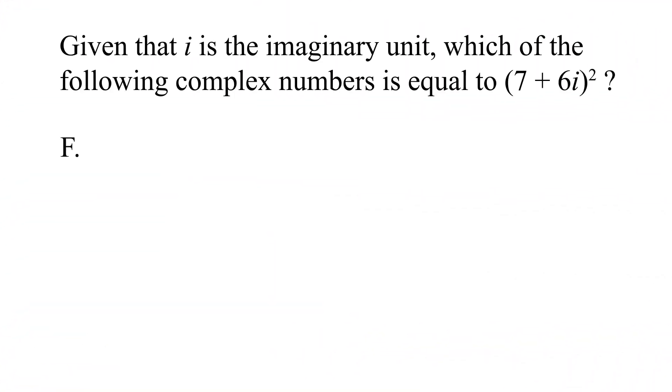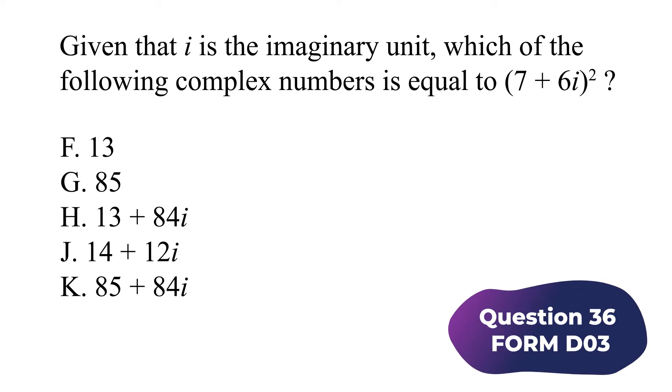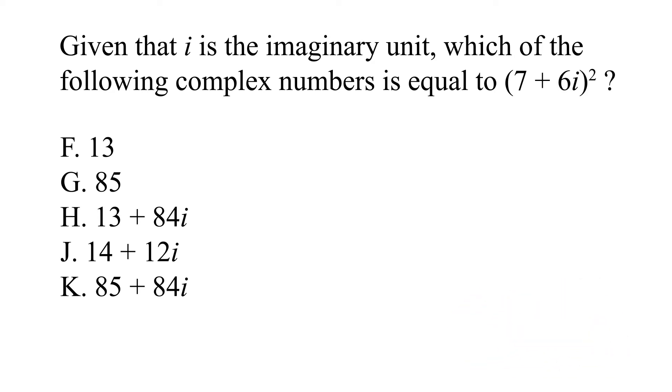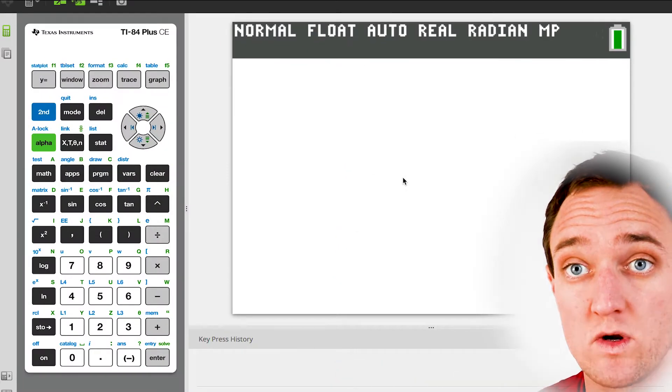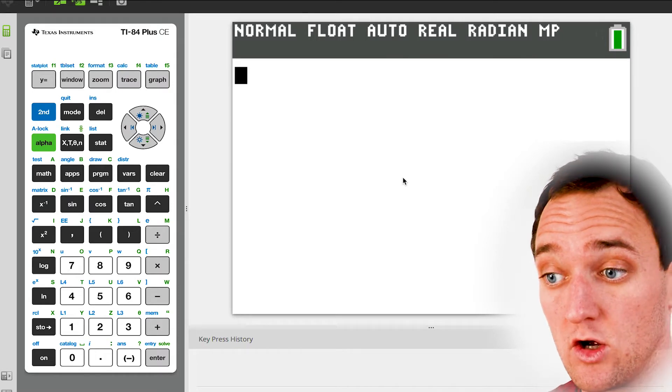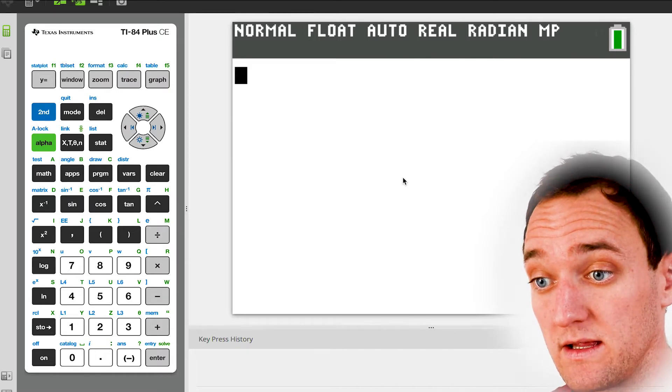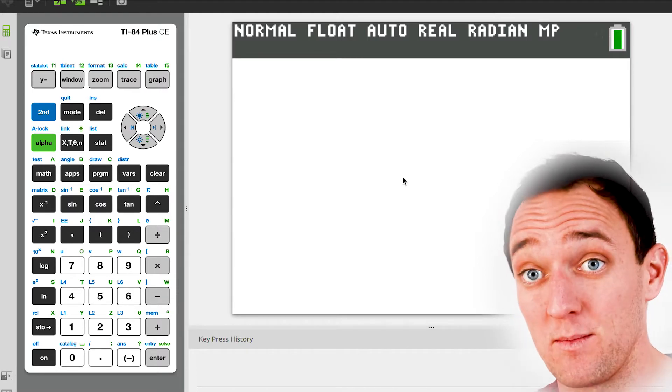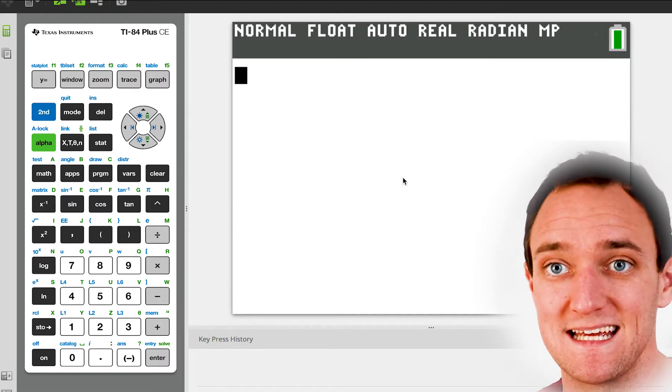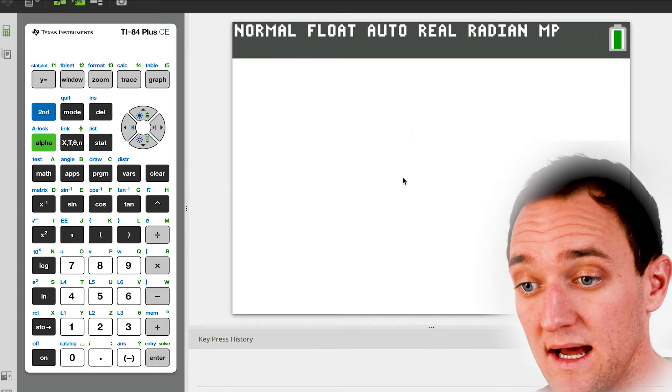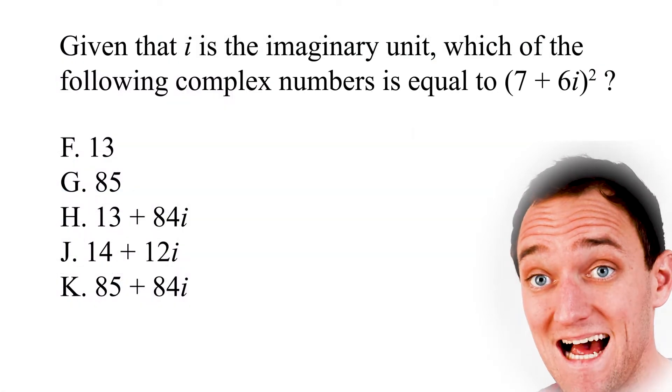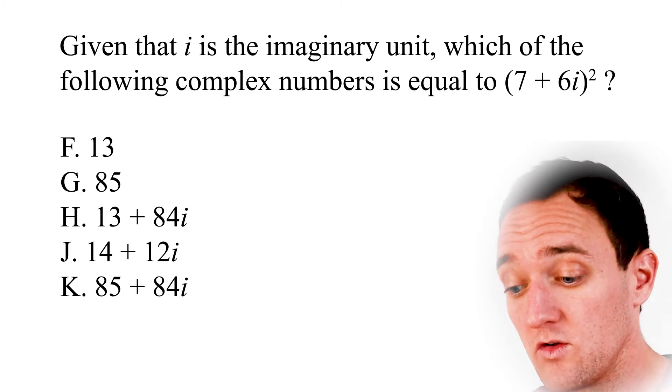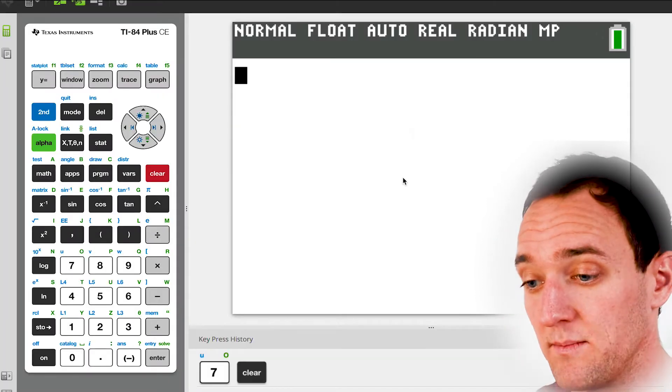So here's our first question. Given that i is the imaginary unit, which of the following complex numbers is equal to (7+6i) squared? So to solve this question, I just want to jump right back over here to my TI-84 calculator. I've got it on my computer here as well so that you can see a little bit better what I'm doing. But just looking back at that question, we have 7+6i, all of that squared.